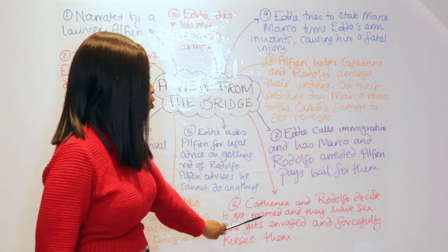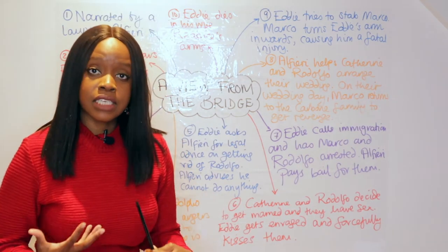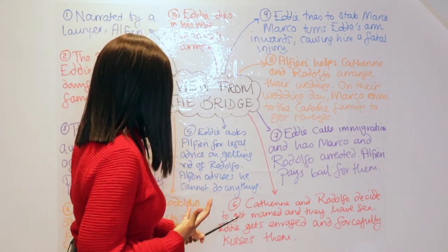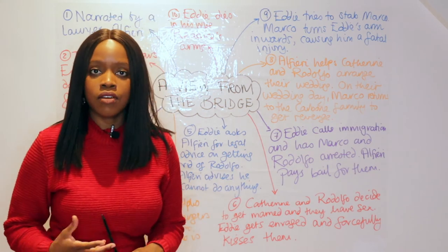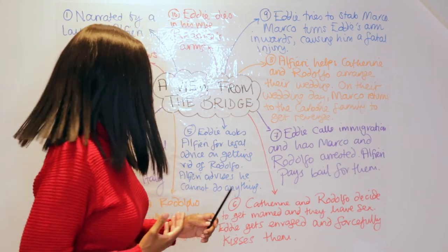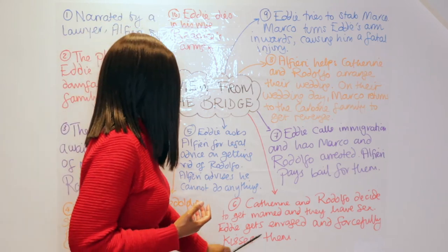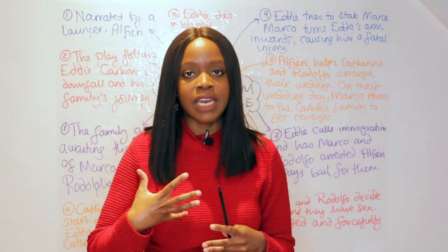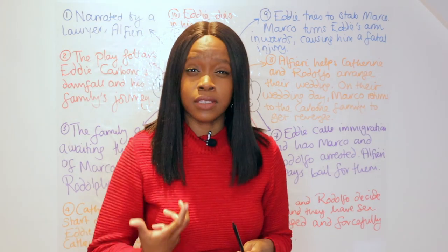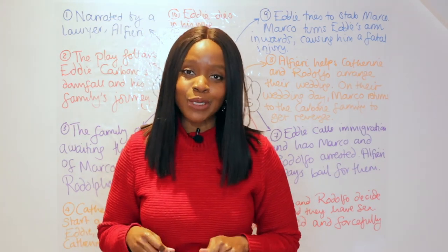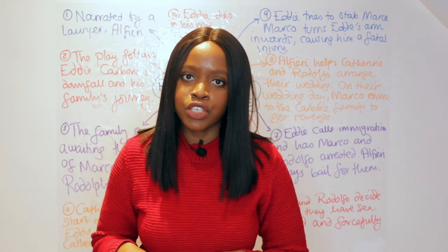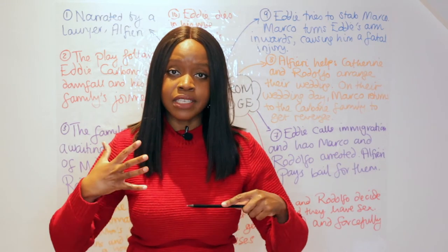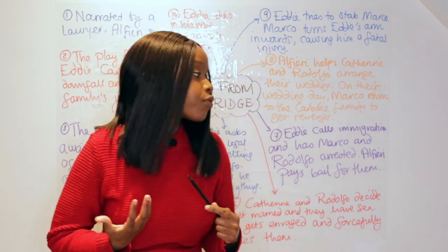Catherine and Rodolfo decide to get married and we learn they have sex. When Eddie discovers this, he becomes enraged. He forcefully kisses Catherine — giving in to his desire for her — and also forcefully kisses Rodolfo as a way to prove his homosexuality to everyone, intending to embarrass him.